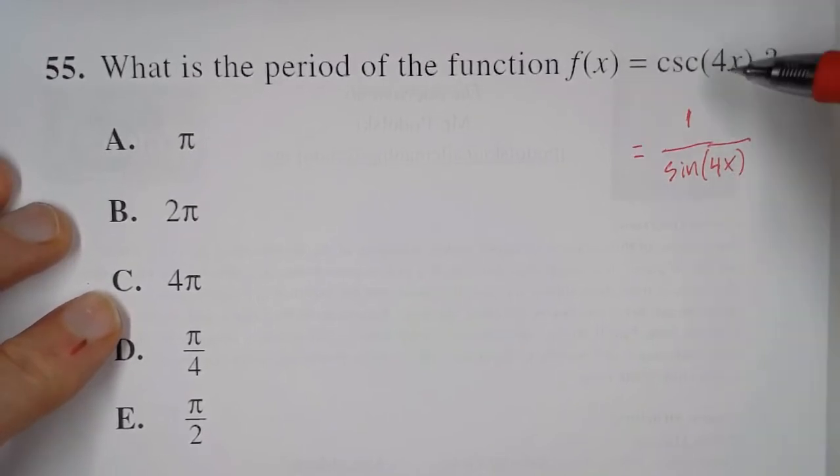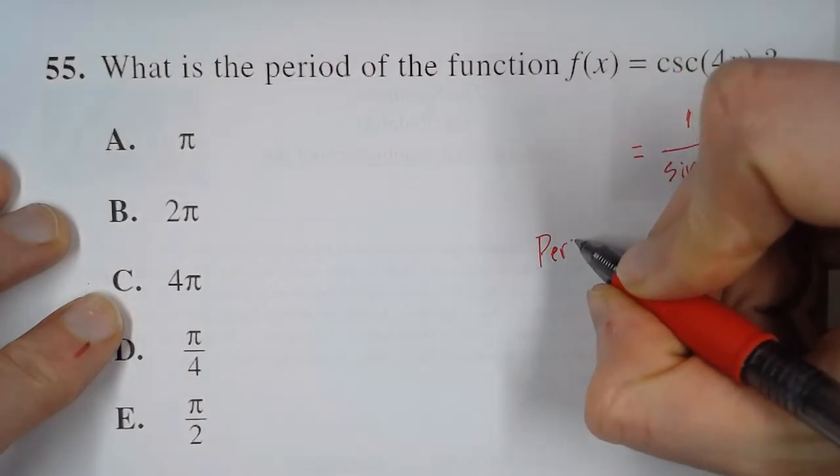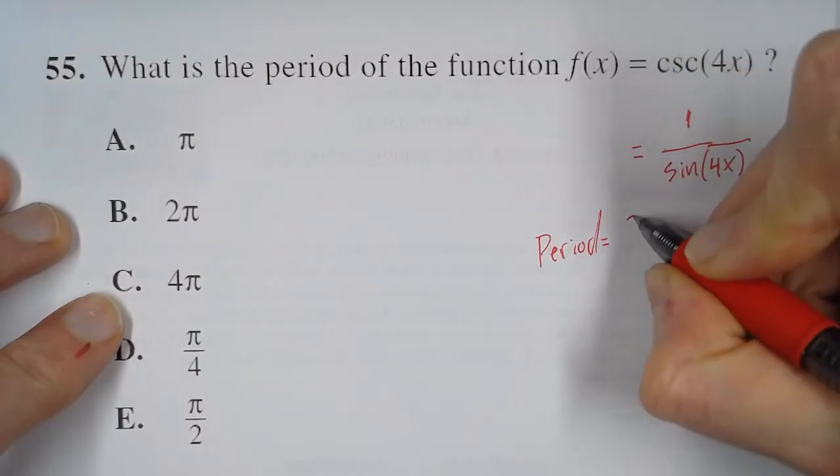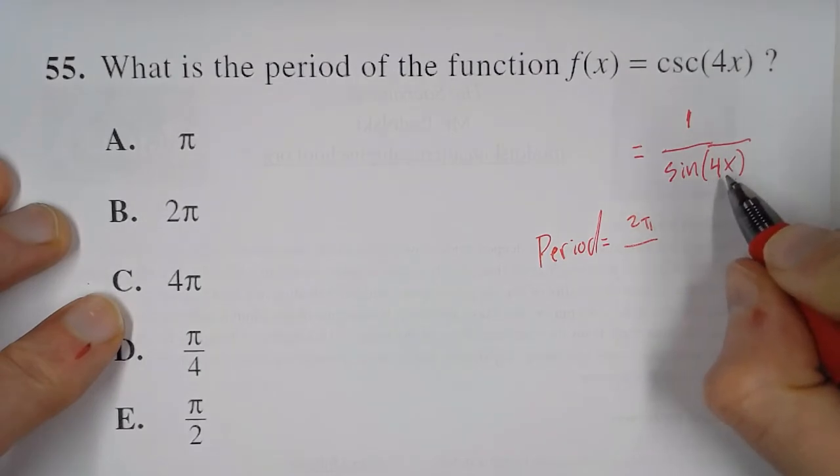And so, whatever the period length of cosecant, it's related to the period of sine. The way we find the period length of sine is we take 2π divided by this constant inside the parentheses.